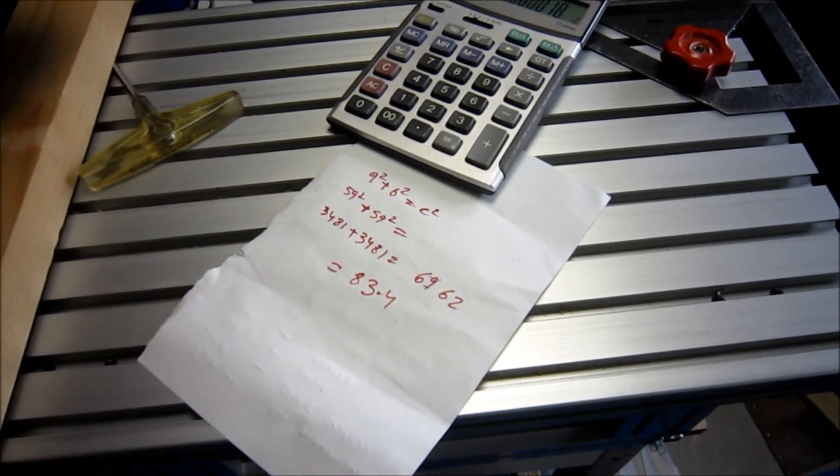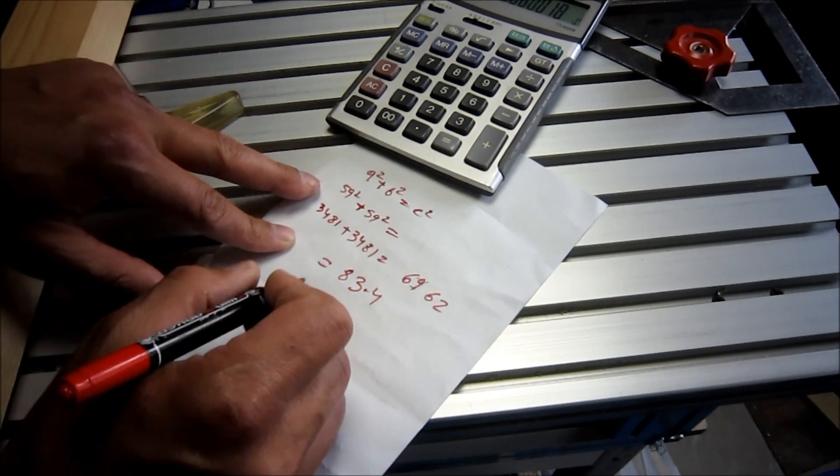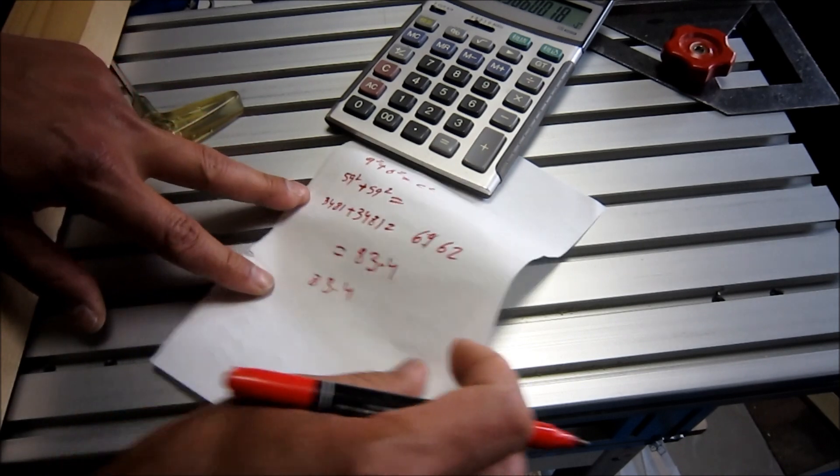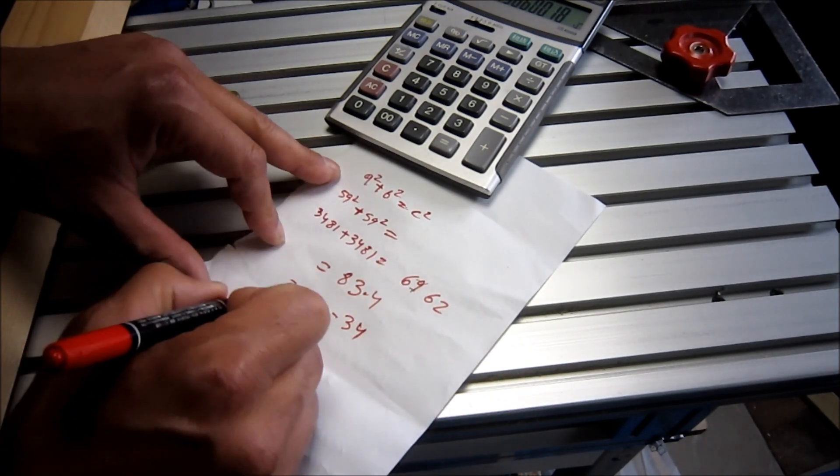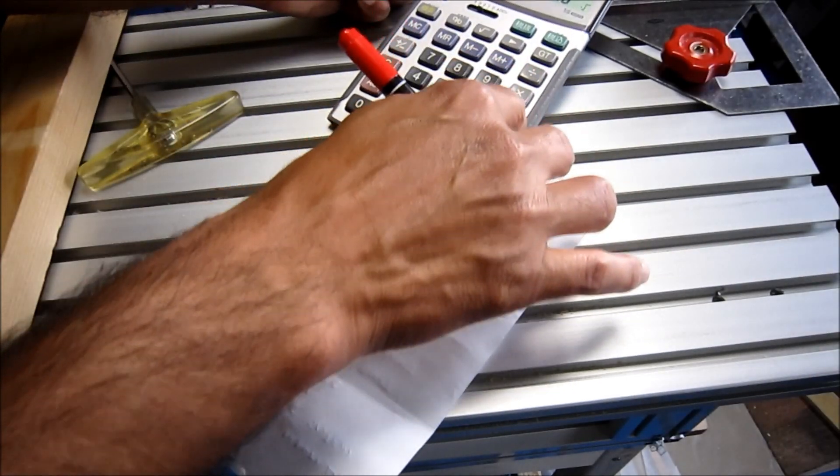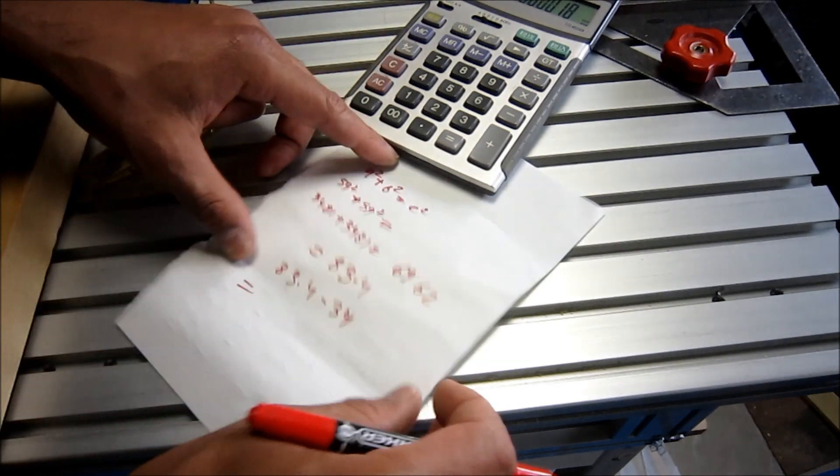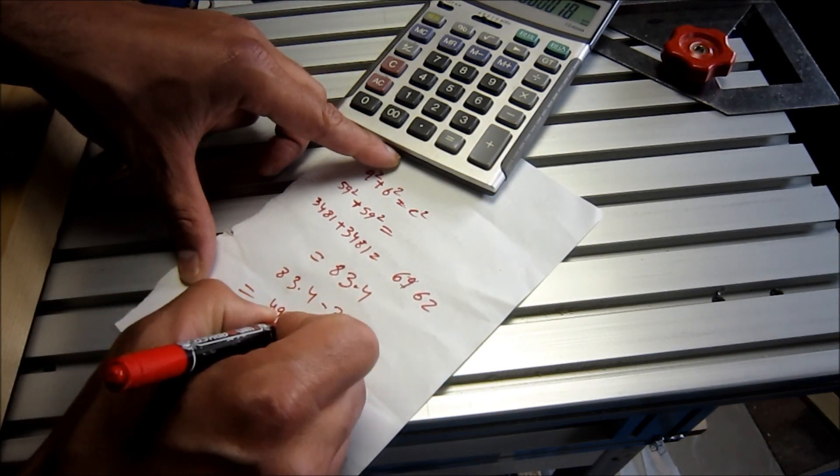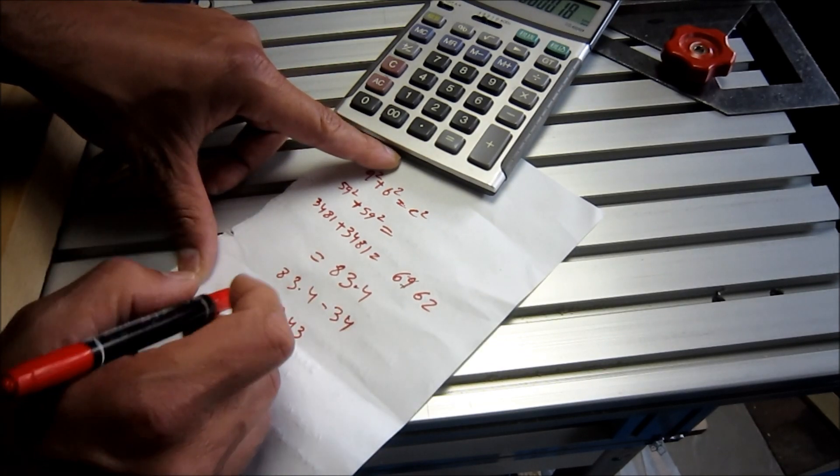Since our tenon width is going to be maximum 34 mm, so 83.4 minus 34 is 49.43.